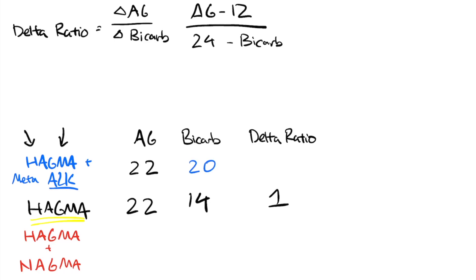We'll plug this number in again. So we have 22 minus 12 over 24 minus 20. Now, we have 10 over 4 or 2.5. So the delta ratio here is going to be 2.5, much higher because we've raised the bicarb. We've increased the denominator.